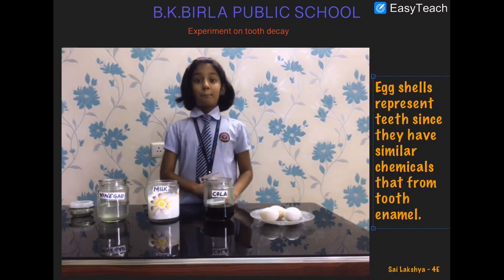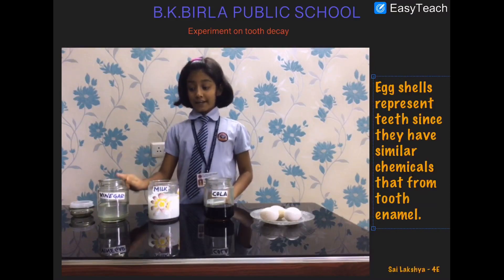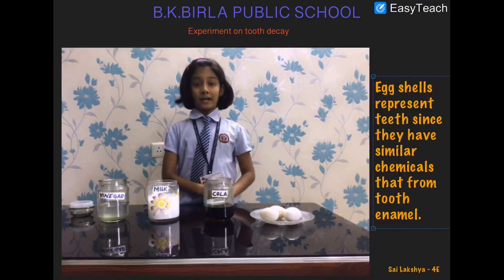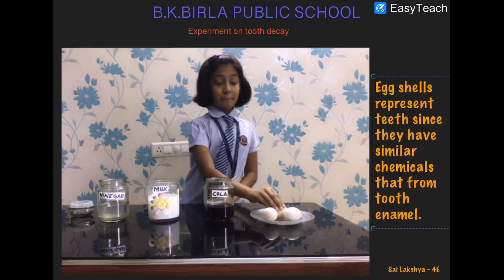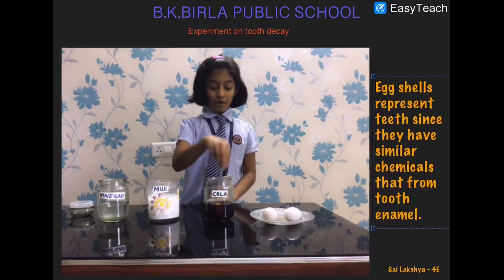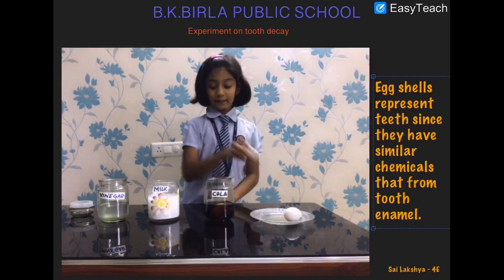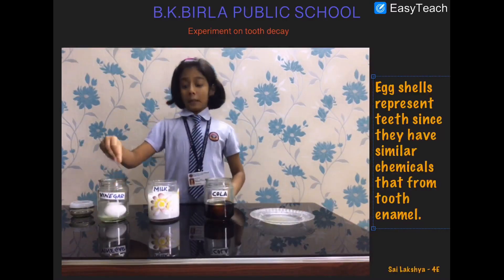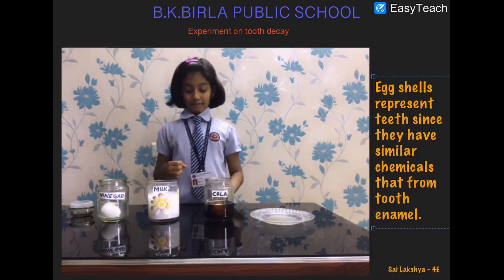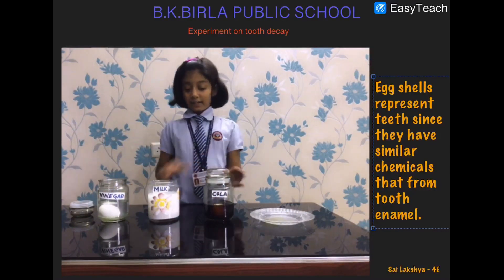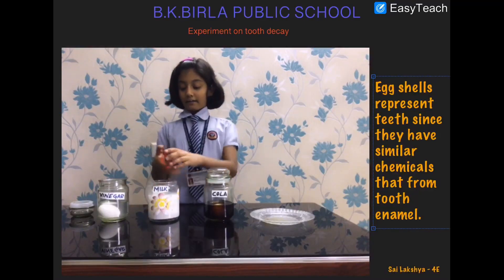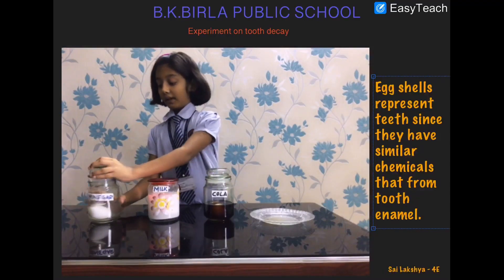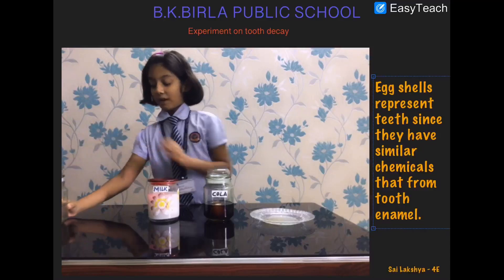Step one: pour milk, vinegar, and cola into three separate jars. Step two: gently lower the eggs into the three separate jars. Step three: tighten the lid and close the jars. Let them sit for one week.